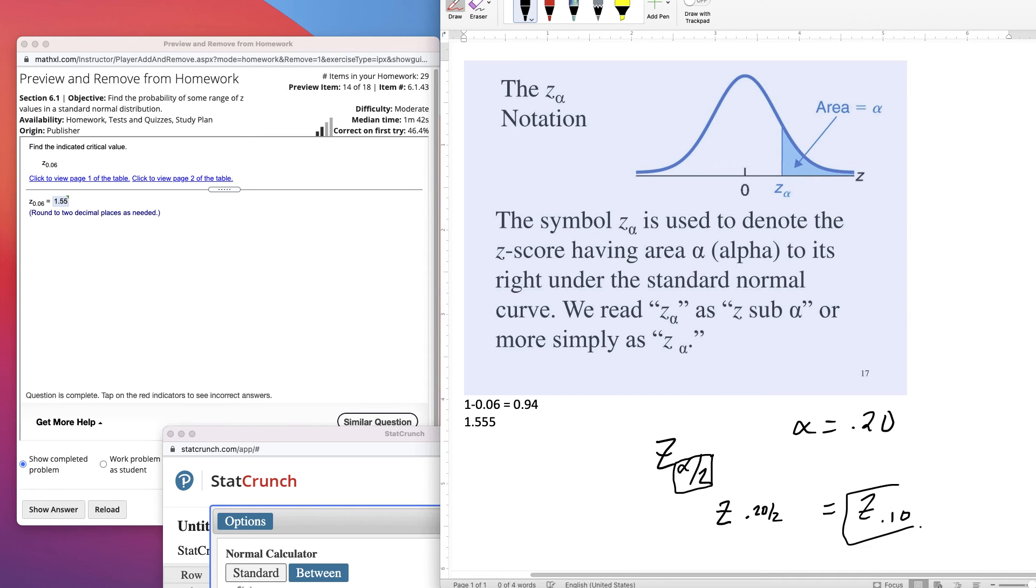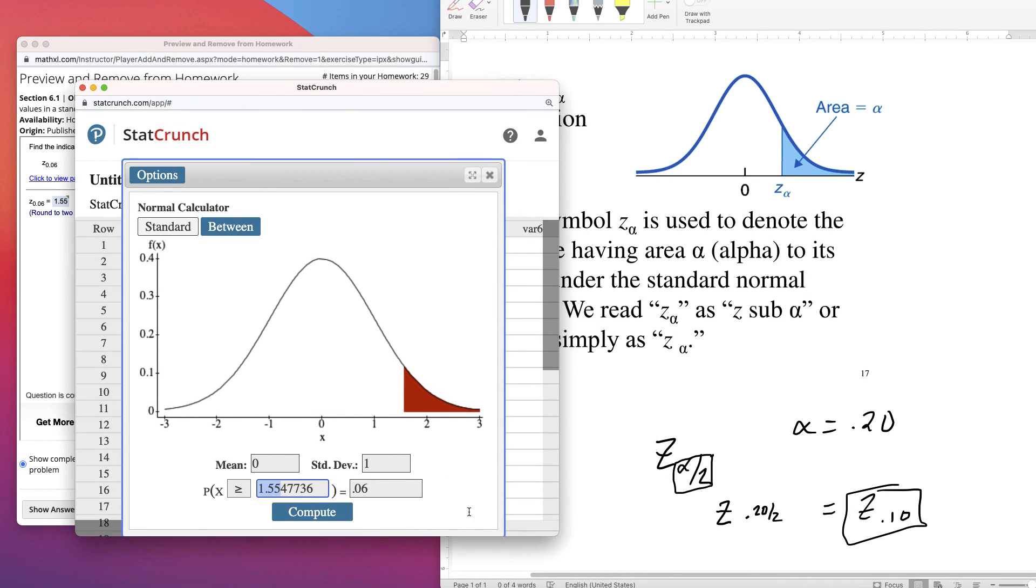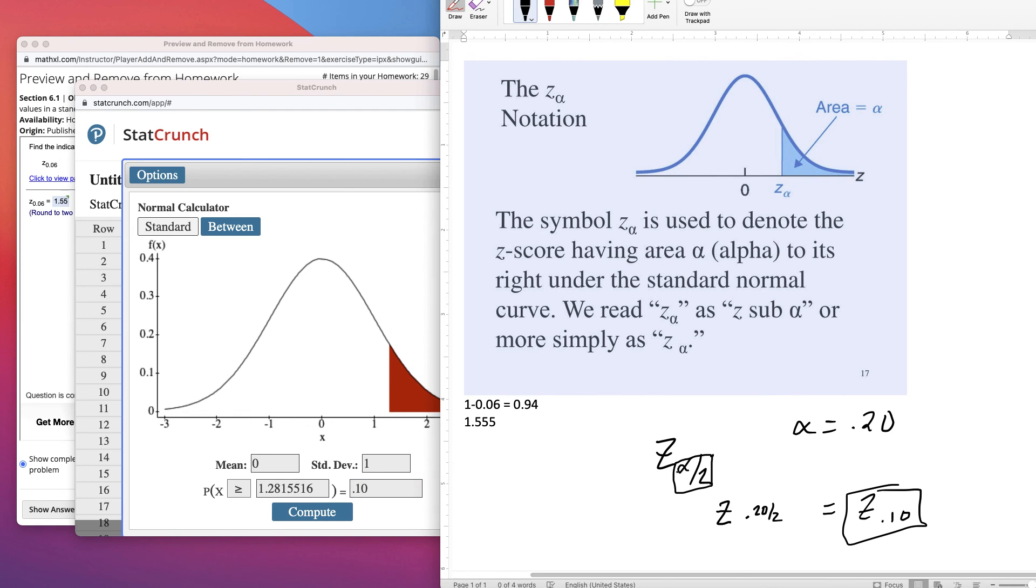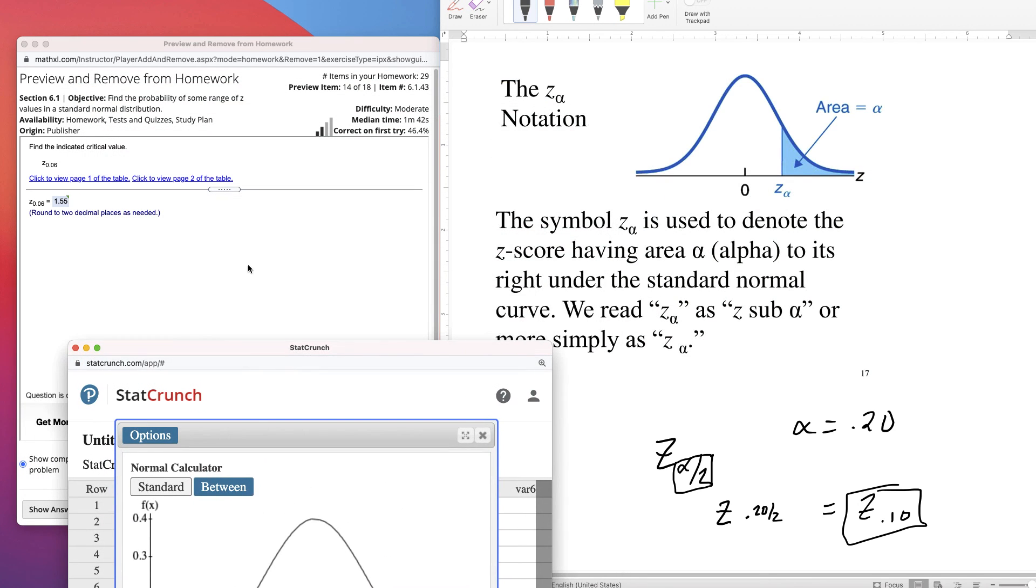So in this case, it would only be looking for 10% to the right. And you could go into StatCrunch, change this number here to 0.10. And then you would get your answer. So this is later in the stats book when you encounter z sub alpha divided by 2. Right now, in our stat book, we're only doing z sub alpha. So the area to the right of the z score.